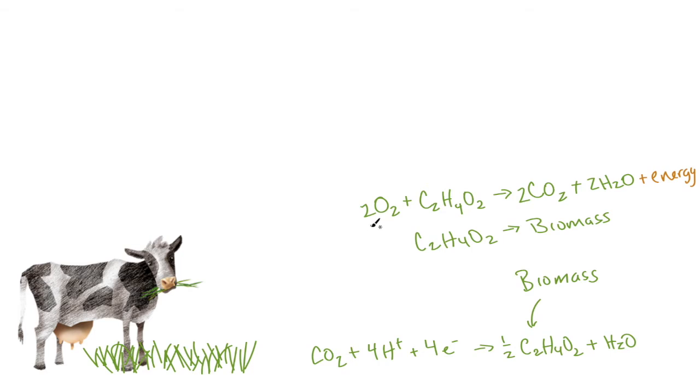So the proportion of these two varies a little bit, but on average, 90% of what an animal eats goes into producing the energy for it to live, and only 10% goes into the biomass of creating the cow.